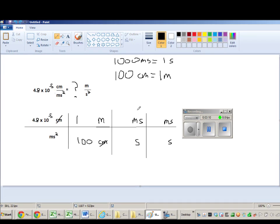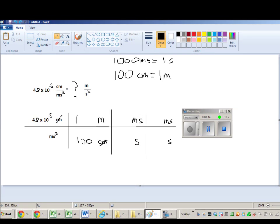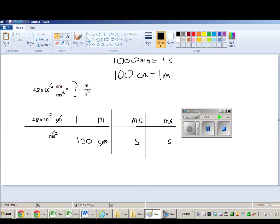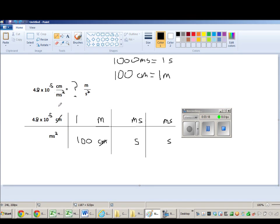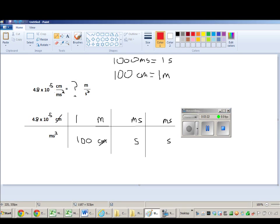And it will give me milliseconds squared on the top, milliseconds times milliseconds, to cancel out with this millisecond squared in the bottom. So these will cancel out.